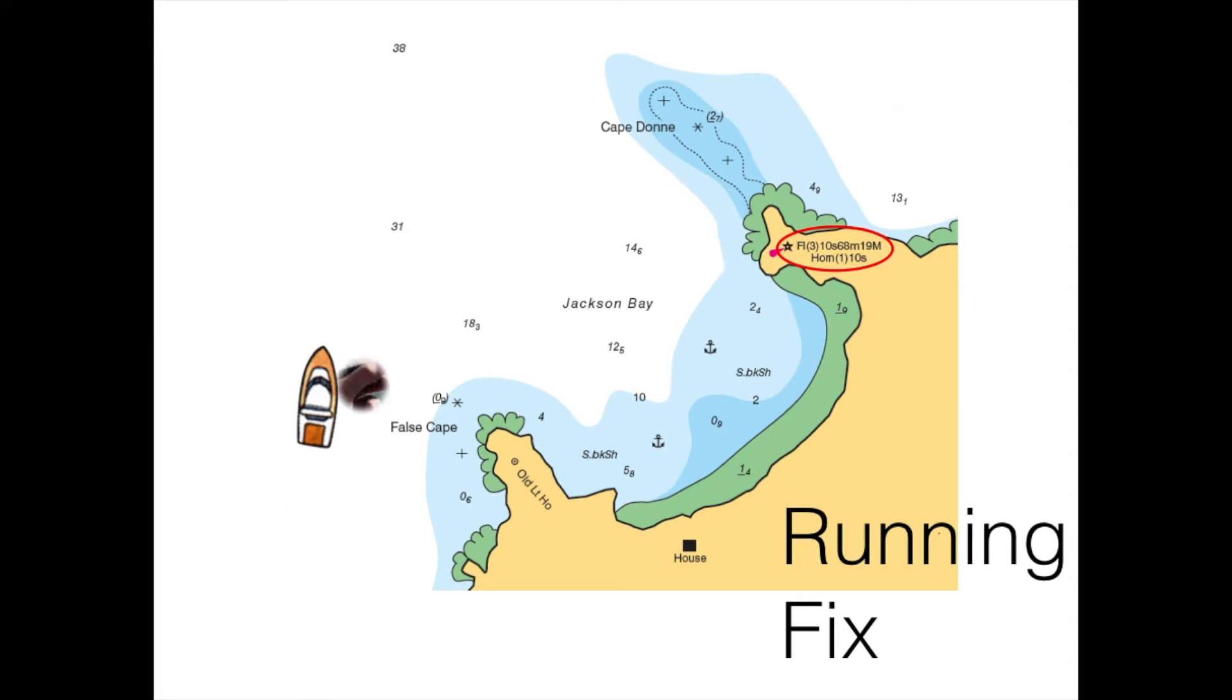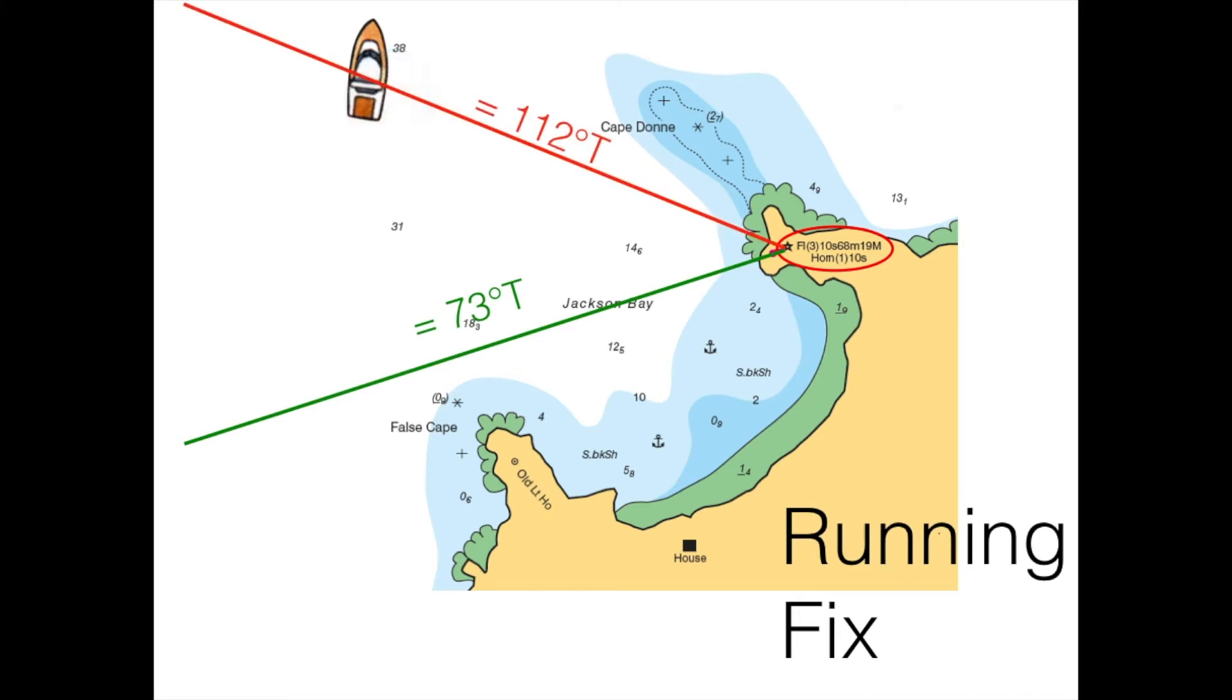So let's say we are sailing northbound here. We take the first bearing to this lighthouse, and let's assume we have a bearing of 73 degrees true. Of course, you first have a magnetic bearing, you take the variation into account, and you draw a line on the chart 73 degrees true. So now what happens is that we continue our cruise, and a little bit later, we take a second bearing.